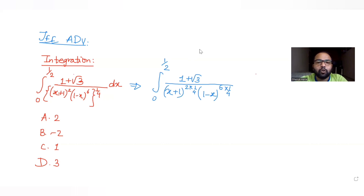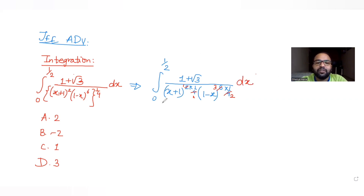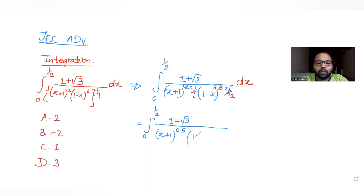Simplifying: 2/4 gives (x+1) raised to 0.5, and 6/4 simplifies to 3/2, that is 1.5. So the integral from 0 to 1/2 becomes 1 plus √3 upon (x+1)^0.5 times (1−x)^1.5, dx.